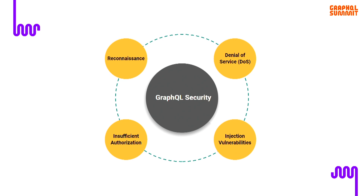Let's start by looking at how attackers, penetration testers, and security professionals might see GraphQL security. This mirrors the way we approach our engagements. Generally we start with an initial reconnaissance phase, where we gather information and try to understand your GraphQL service — what data it holds — and try to prioritize and strategize about it.